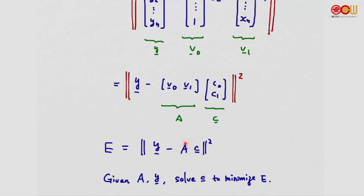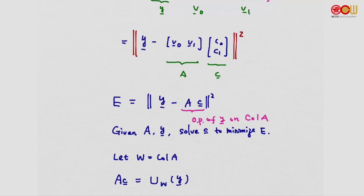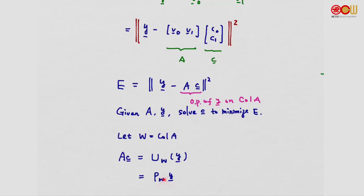How should we choose Ac? Ac is a vector in the column space of A, and we want it to be as close to y as possible. This vector should be the orthogonal projection of y onto the column space of A. If we call W the column space of A, then Ac should equal the orthogonal projection of y onto W. If we know the orthogonal projection matrix P_W, this can simply be computed as P_W * y.